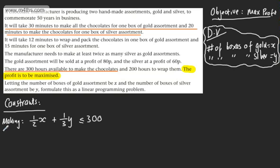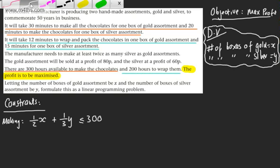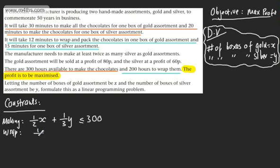Now let's look at the wrapping constraint. It takes 12 minutes to wrap the gold, and 15 to wrap the silver. We've got 200 hours to do that. So we have one-fifth x plus one-quarter y — this is the total time for wrapping x boxes of gold and y boxes of silver — and that must be less or equal to 200.